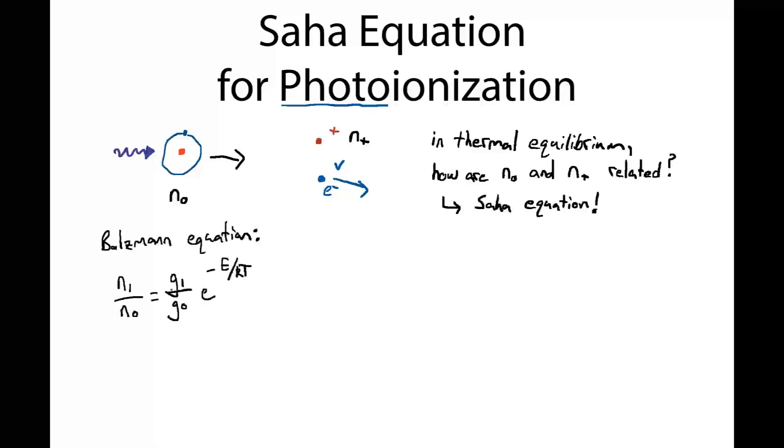Now when we're talking about thermal equilibrium and the populations in different states, a natural starting place is the Boltzmann equation which says that the number density in a higher energy state compared to the number density in a lower energy state is just related by the degeneracies of those two states, these g factors, times e to the minus the energy difference E divided by kT. And we've solved this Boltzmann equation before for bound states of atoms like hydrogen.